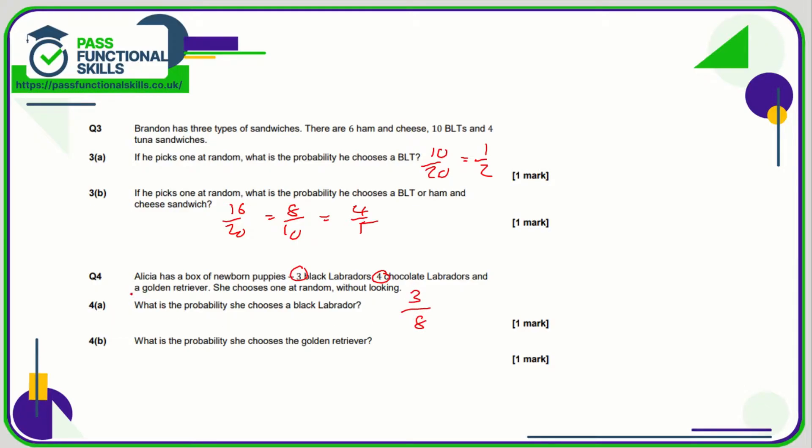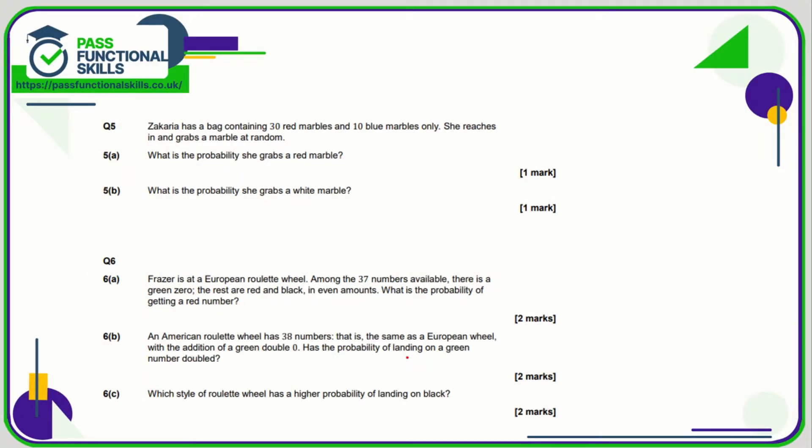So the probability is three out of eight. And the golden retriever is just one golden retriever, so that is one eighth.